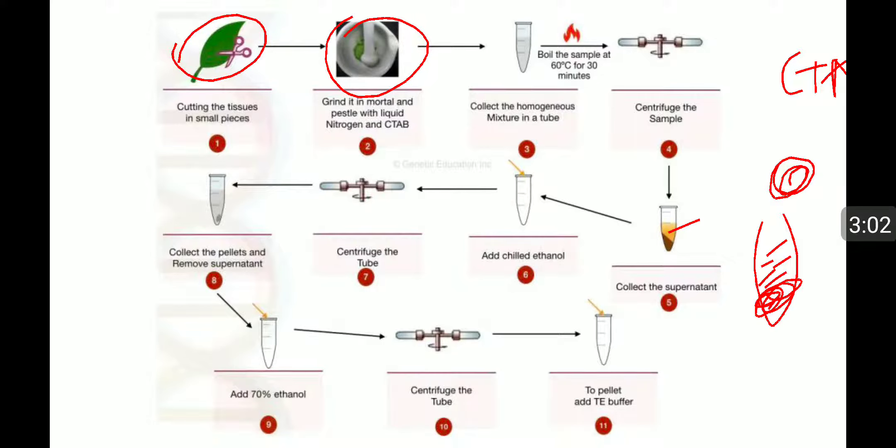The supernatant is the liquid above the sample. We are going to collect this supernatant and add chilled ethanol to it. After that, again we are going for centrifugation. After centrifugation, collect the pellet and remove the supernatant. The DNA pellet will be there, you can see it easily after centrifugation.